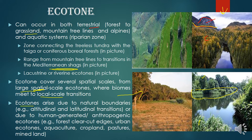So when we consider spatial scale, ecotones are of two types: large scale and small scale. Ecotones can also be due to natural reasons or due to human-generated reasons. Natural ecotones can be altitudinal or latitudinal.